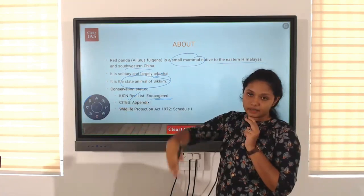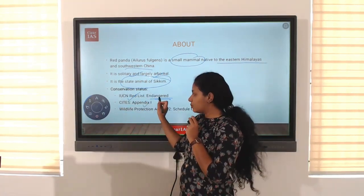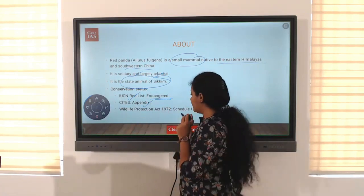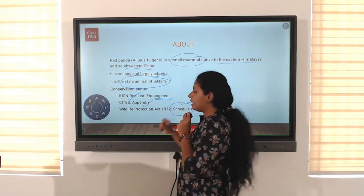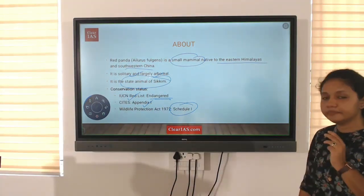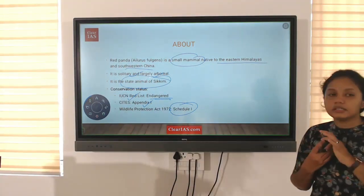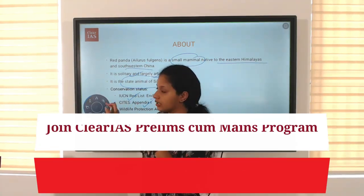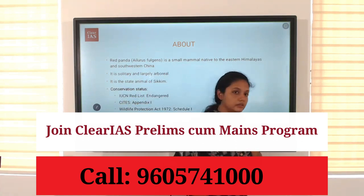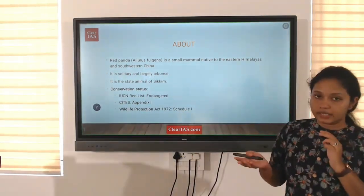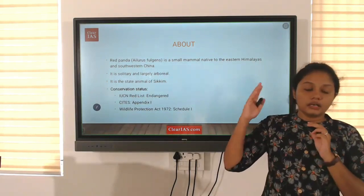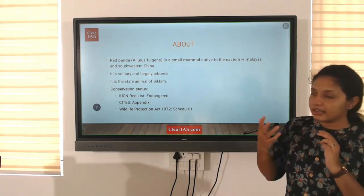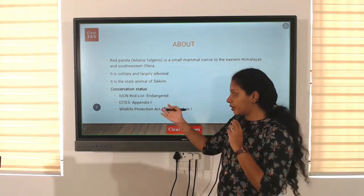Mainly the countries of India and China. According to CITES, their conservation status is Appendix 1. Under the Wildlife Protection Act, they are in Schedule 1. This means they are at the verge of extinction and they are a species which are usually traded, which is why they are given the protection of Appendix 1.